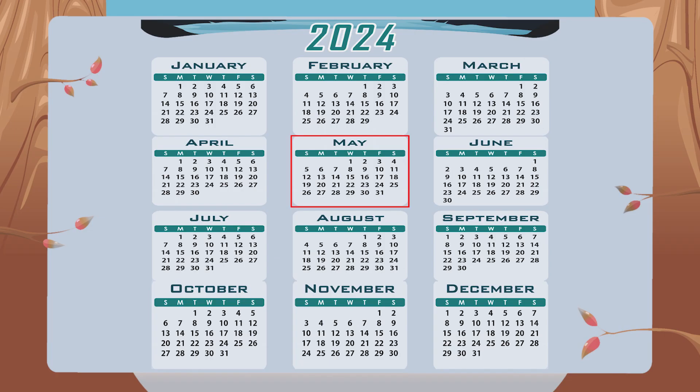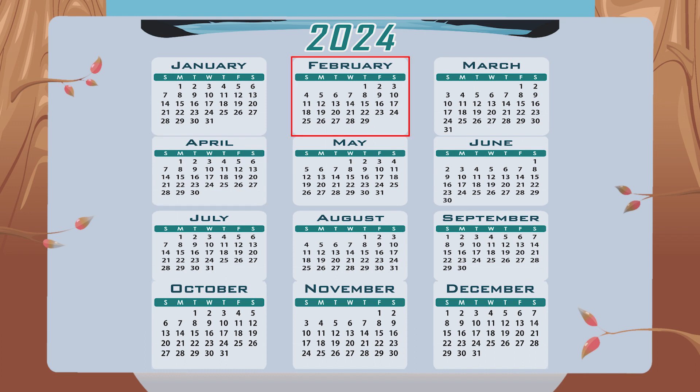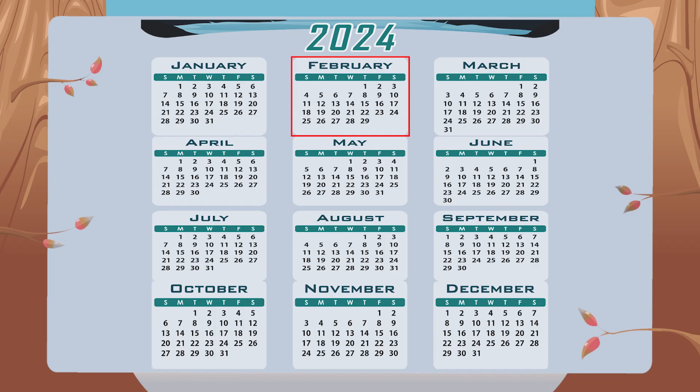This is 2024. Let's see the calendar of 2024. Look at the calendar and tell me how many days are there in each month. Some months have 31 days, some have 30 days, and February has only 29 days. February normally has 28 days, but because 2024 is a leap year, it has 29 days.